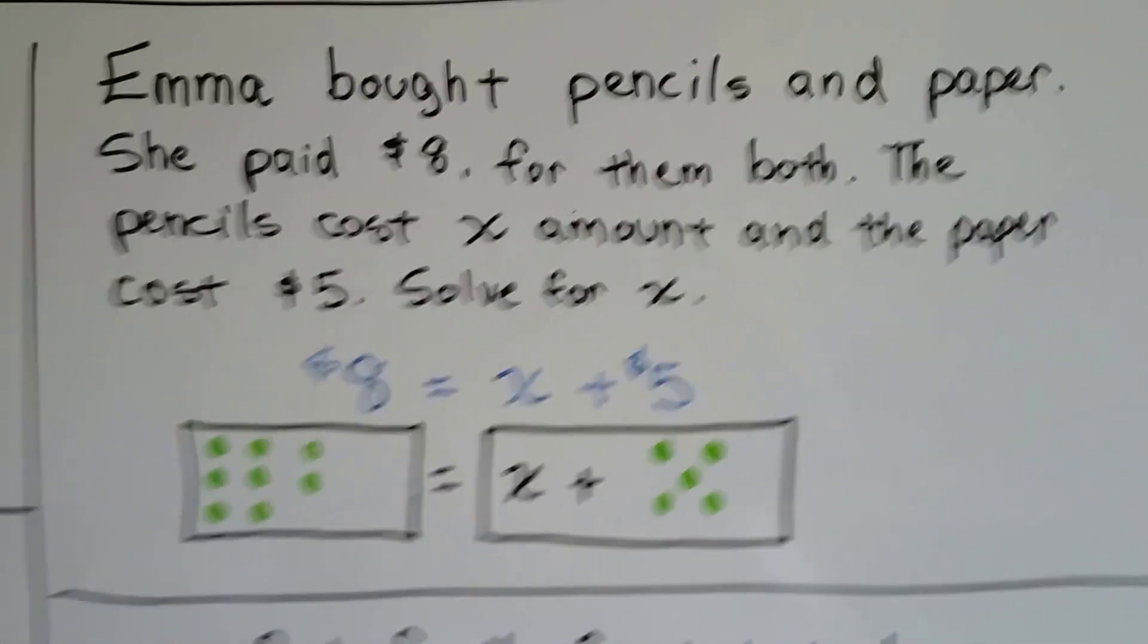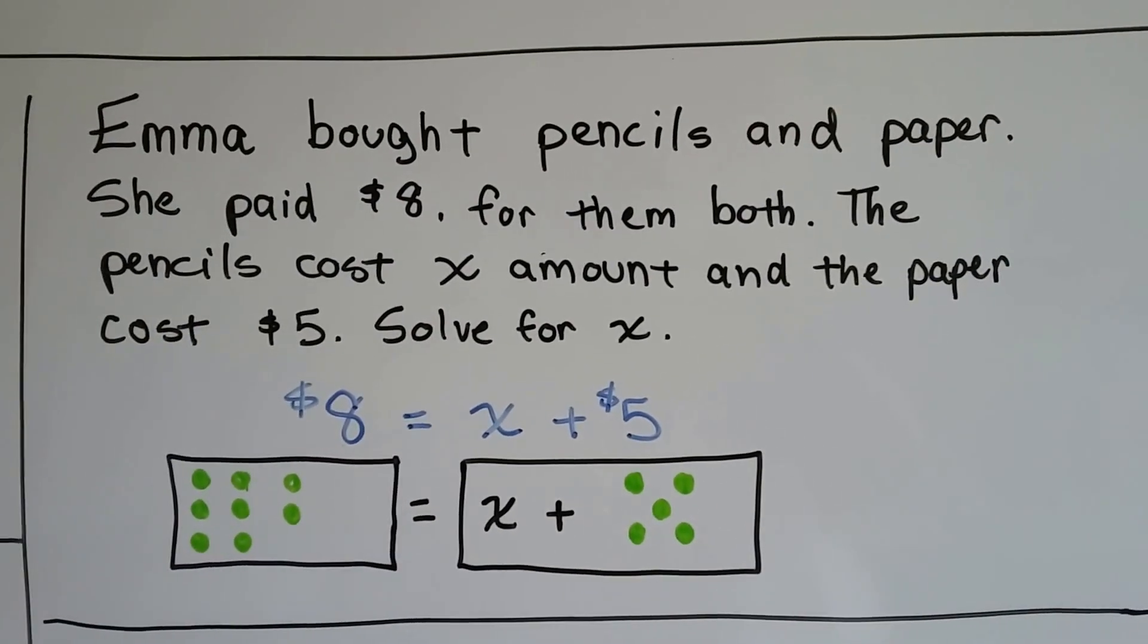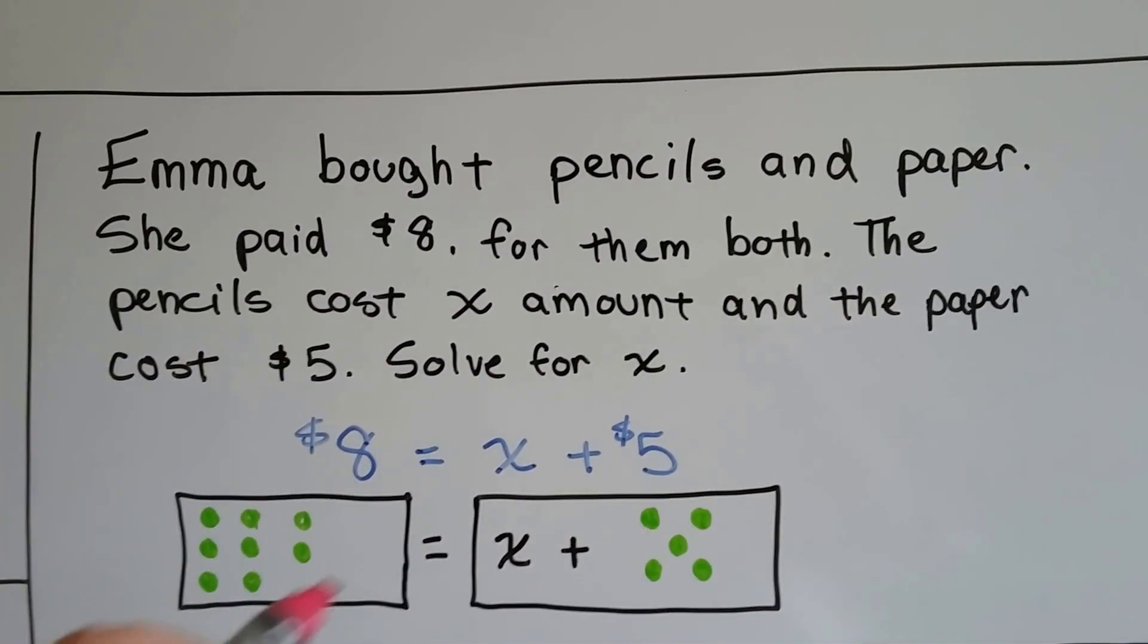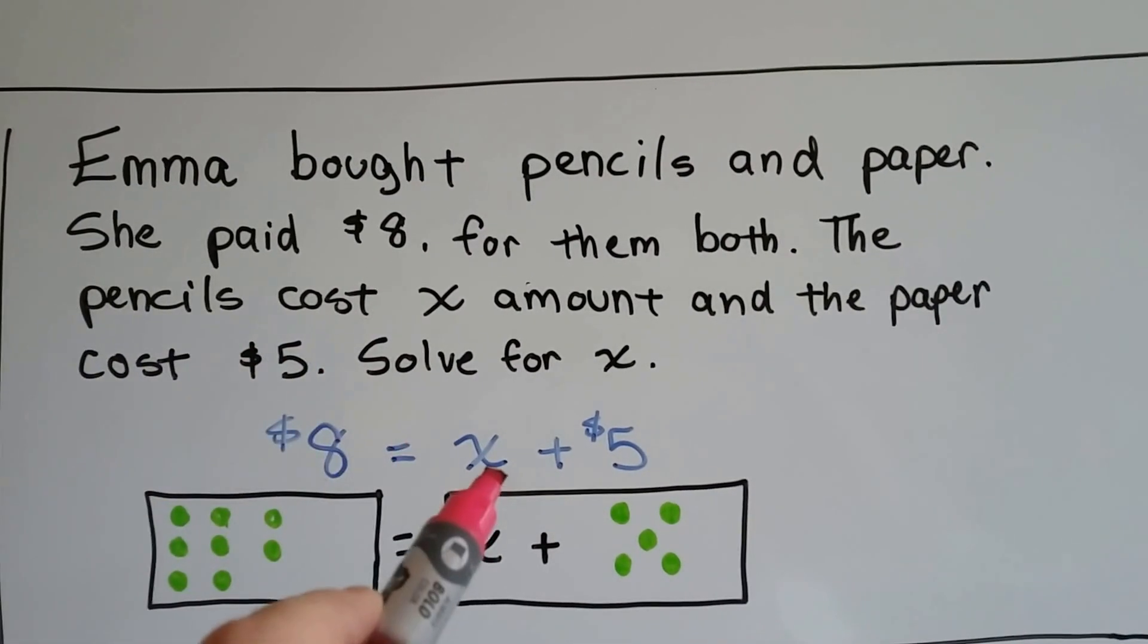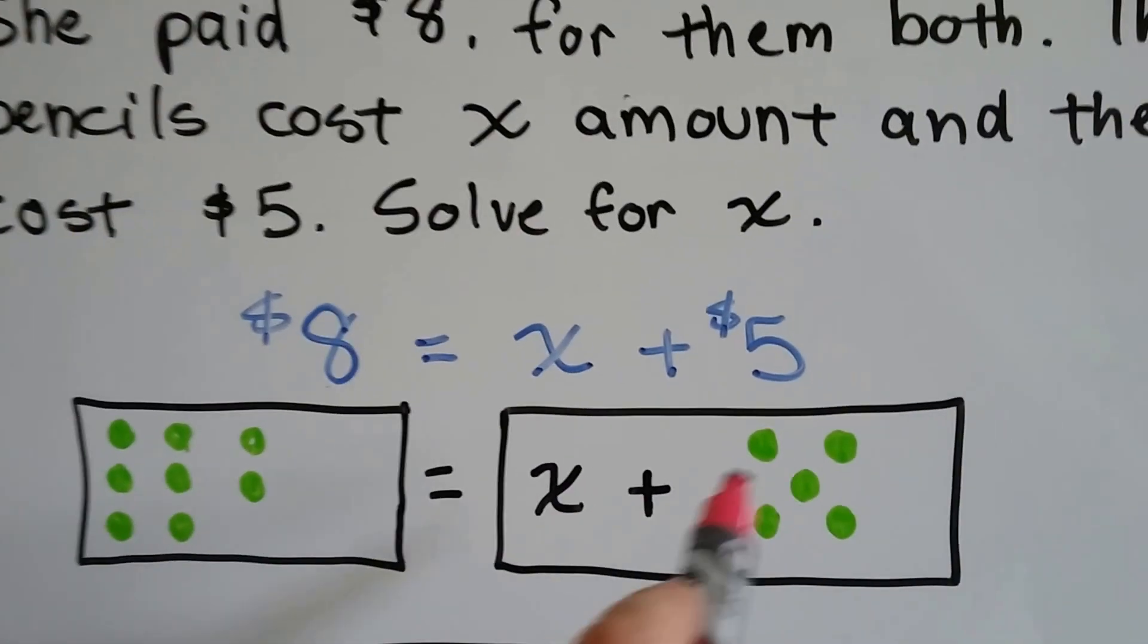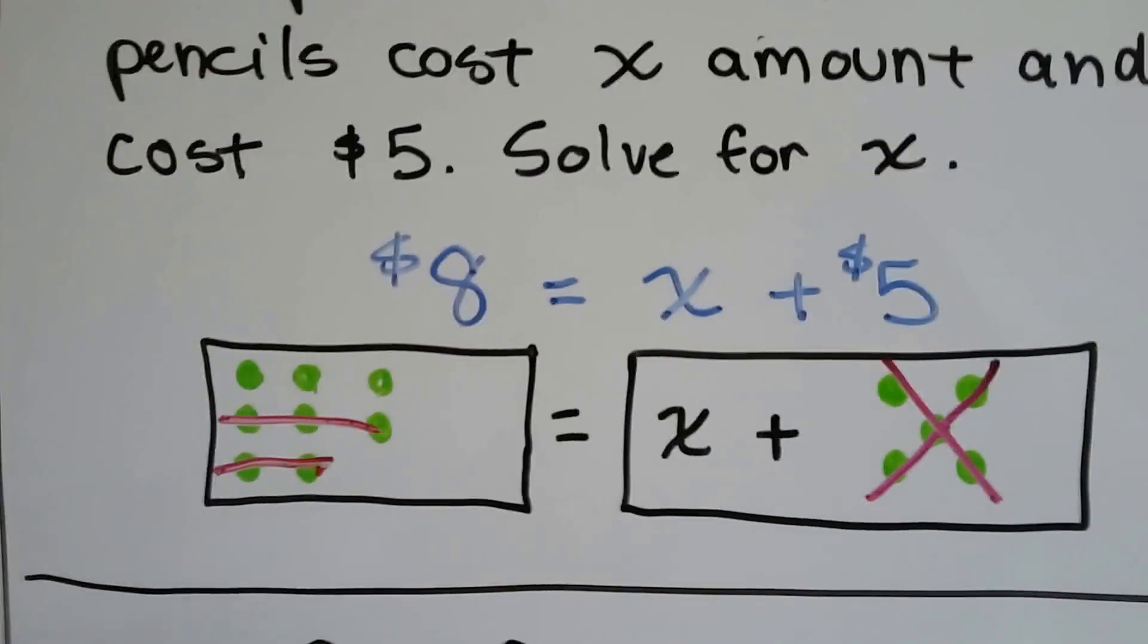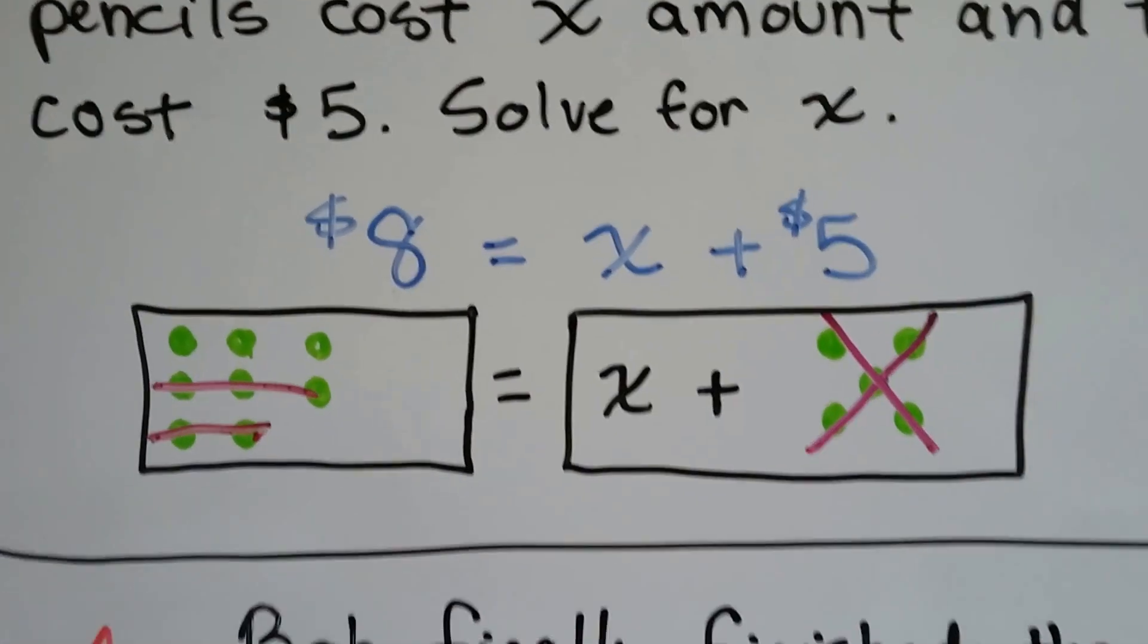Let's do a word problem. Emma bought pencils and paper. She paid $8 for them both. The pencils cost x amount and the paper cost $5. Solve for x. She paid $8 for them both, so that's going to be the big number on this side of the equal sign. The pencils cost x and the paper costs 5, so x plus 5 equals 8. We need to get x by itself, so we need to remove the 5. We subtract the 5. That leaves 3. x equals 3.